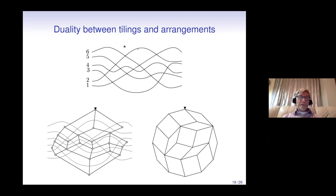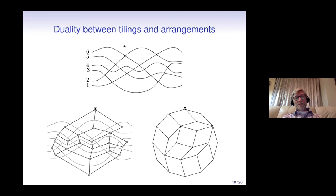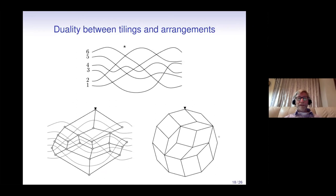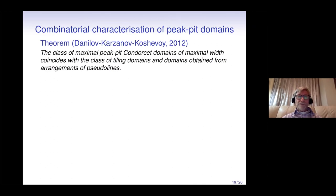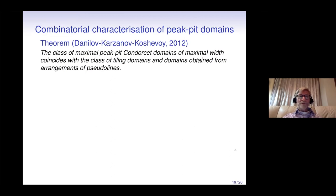This duality is not surprising because rhombus tilings and arrangements of pseudolines are dual combinatorial objects. In their important paper, Danilov, Karzanov, and Koshevoy showed that the class of maximal peak-peak domains of maximal width coincides exactly with the class of tiling domains and domains obtained from arrangements of pseudolines.